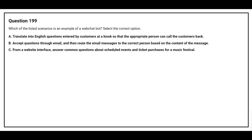Question number 199. Which of the listed scenarios is an example of a website bot? Select the correct option. Option A: Translate into English questions entered by customers at a kiosk, so that the appropriate person can call the customers back. Option B: Accept questions through email and then route the email messages to the correct person based on the content of the message. Option C: From a website interface, answer common questions about scheduled events and ticket purchases for a music festival. The correct answer is Option C.